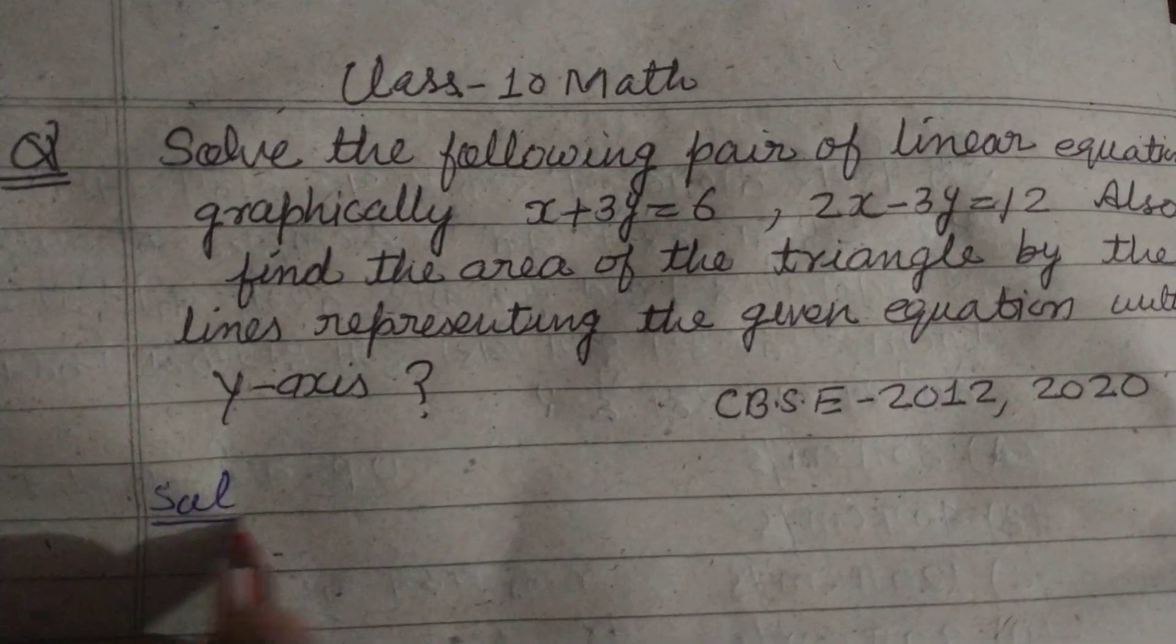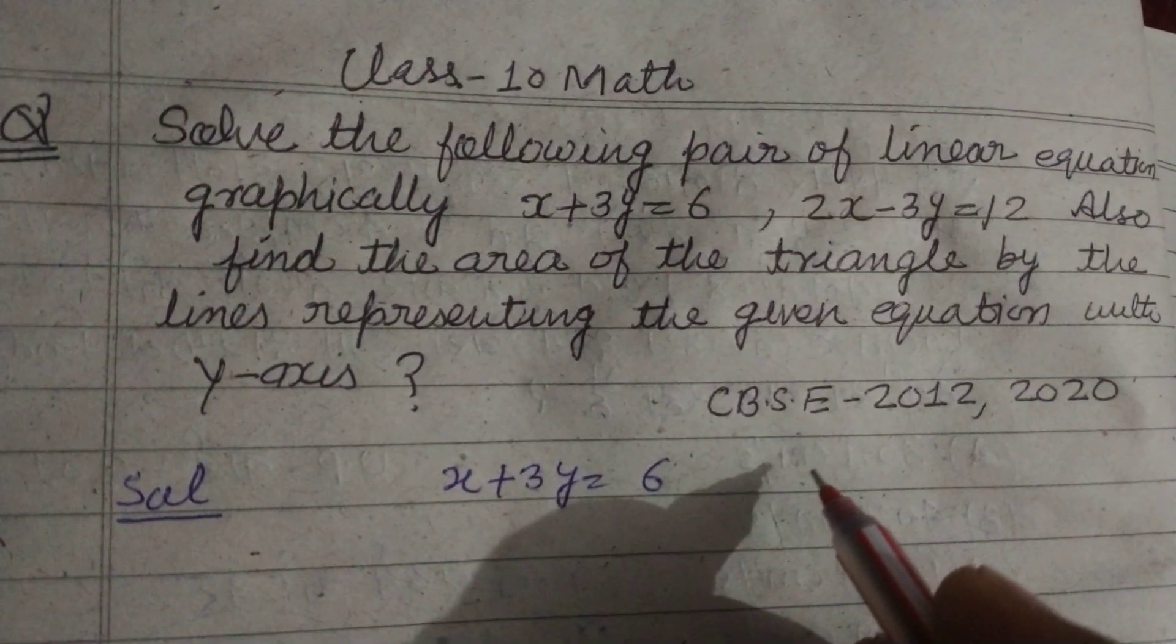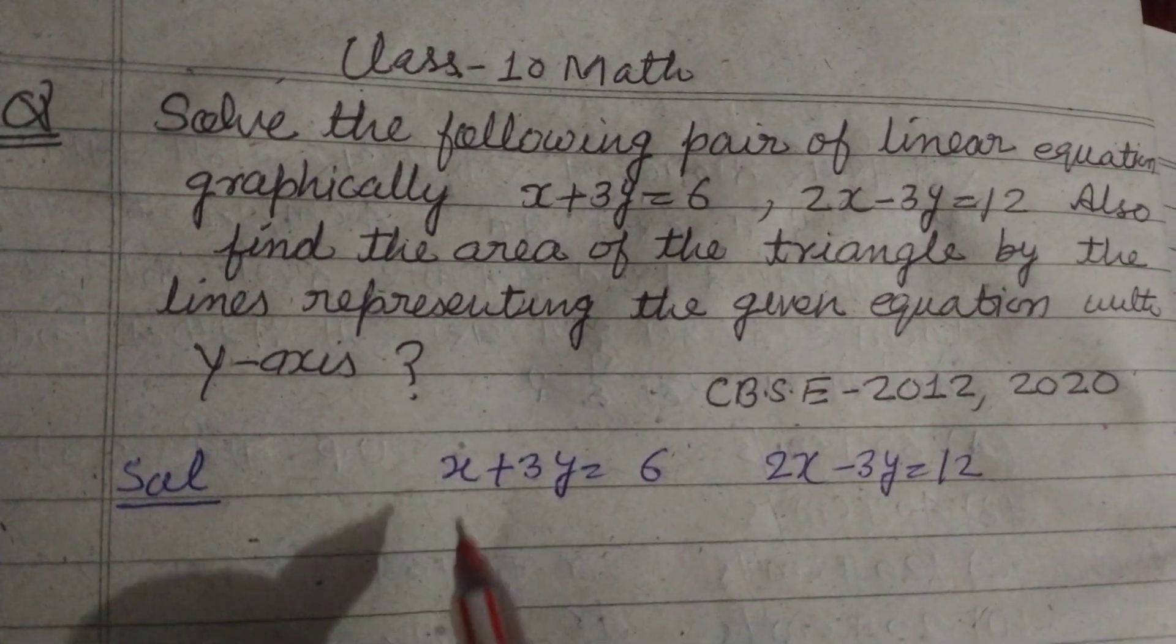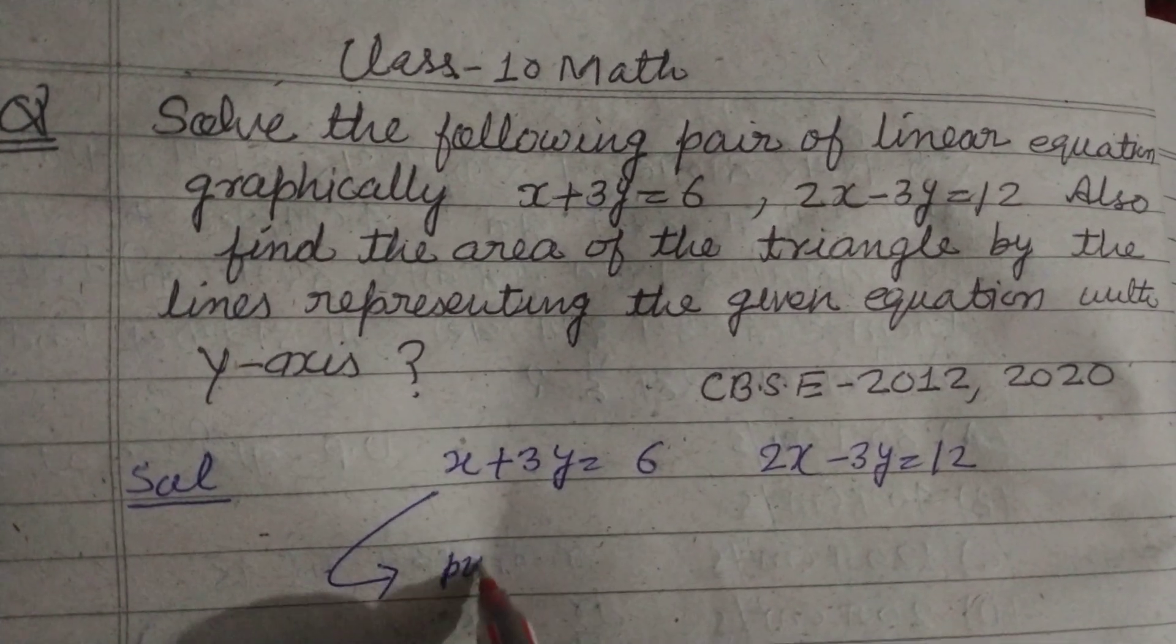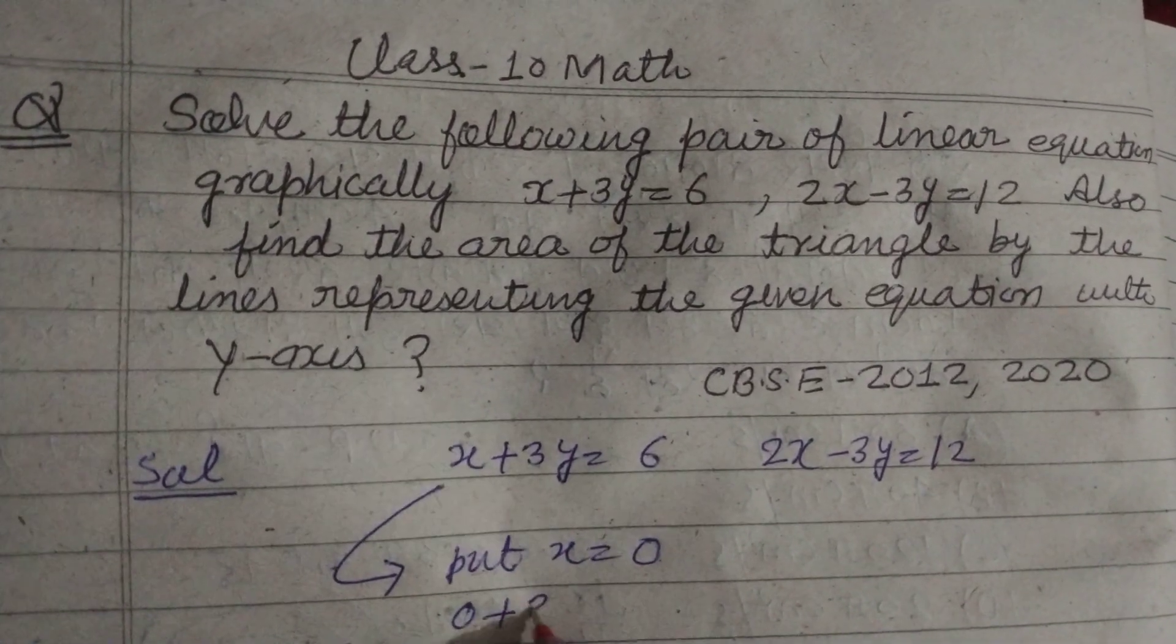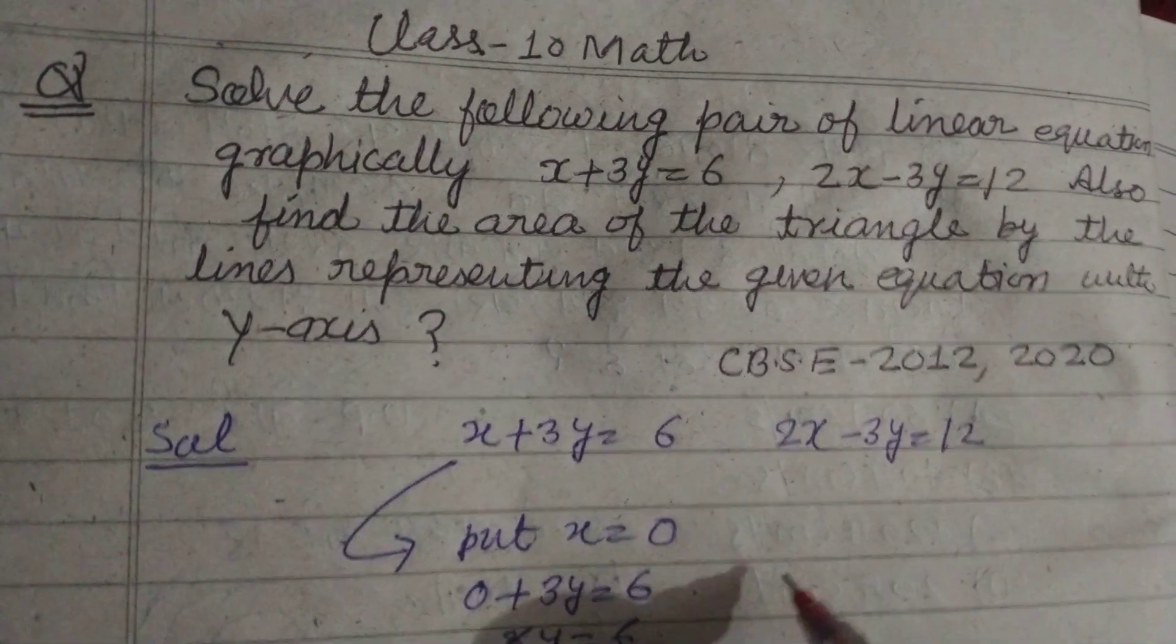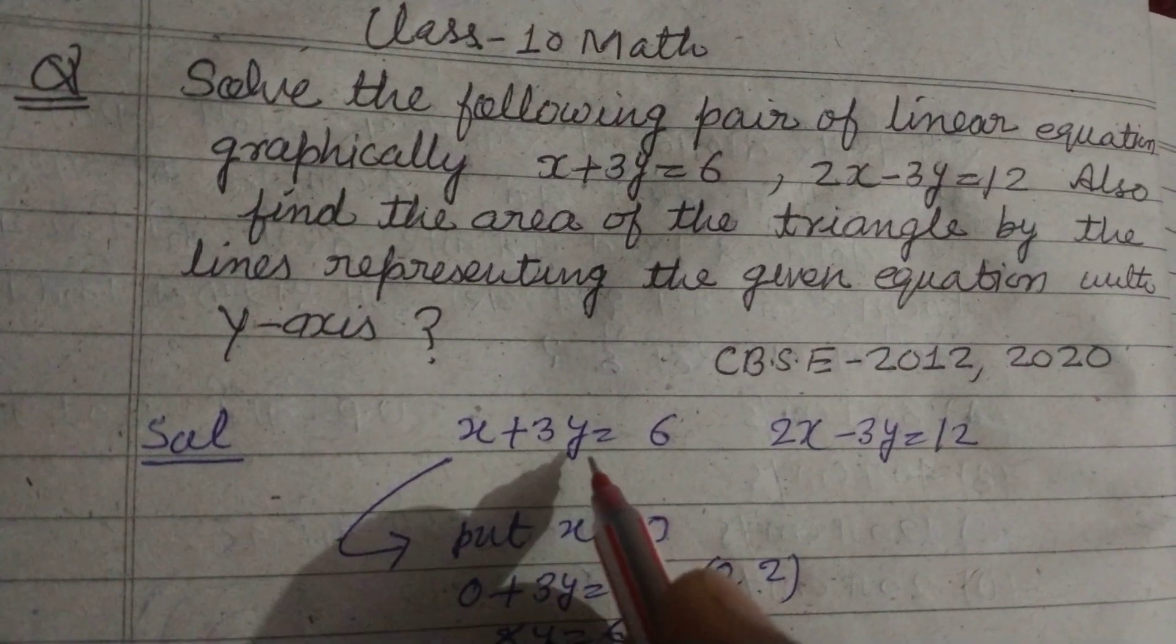So student, first we write the given equations which are x plus 3y equal to 6 and 2x minus 3y equal to 12. For making the graph we want two points on this line. First we put x equal to 0. So 0 plus 3y equal to 6, it means 3y equal to 6 and y equal to 2. So 0 comma 2 is a point on this line.